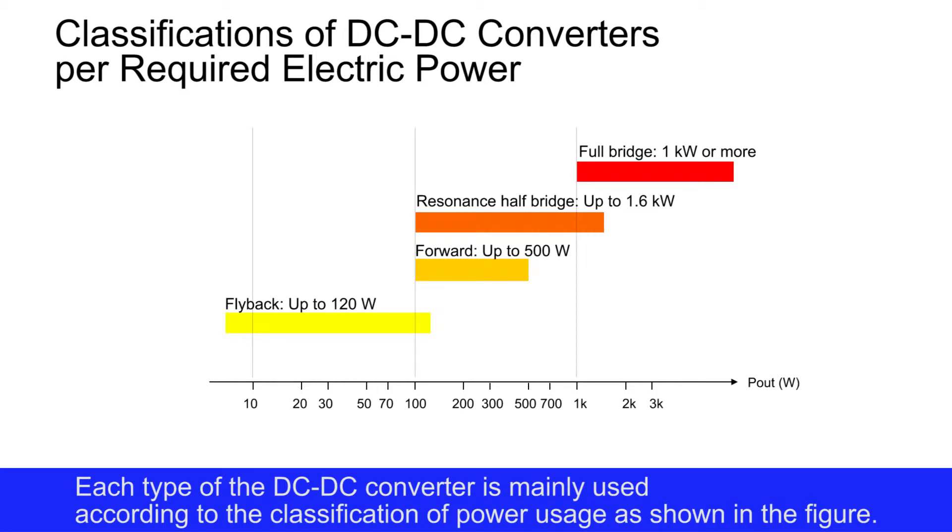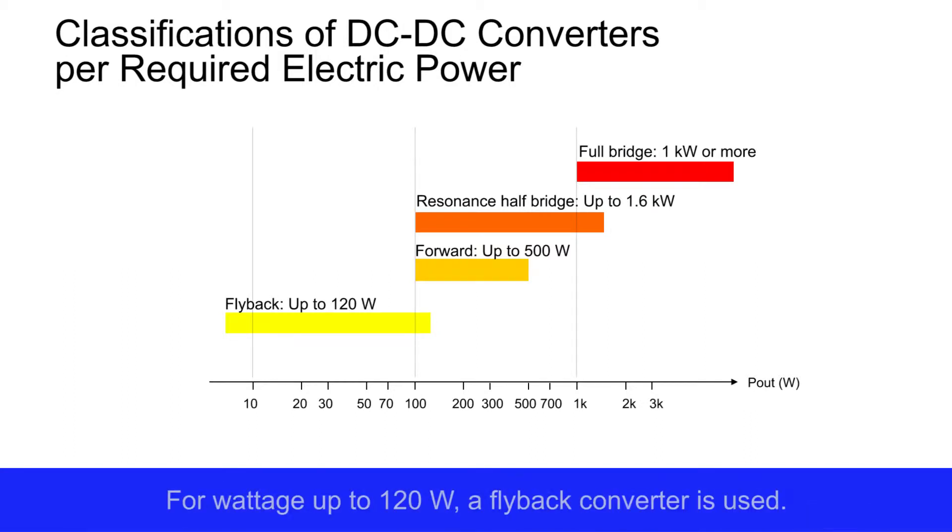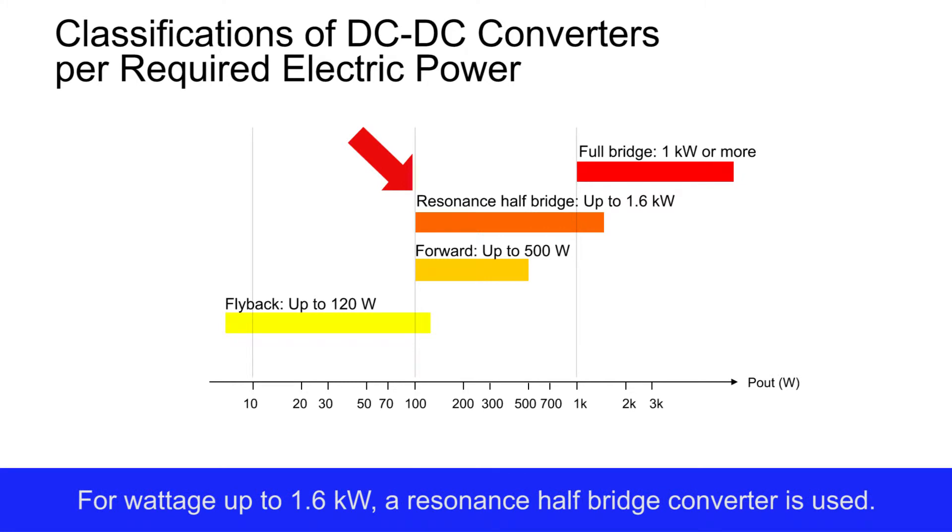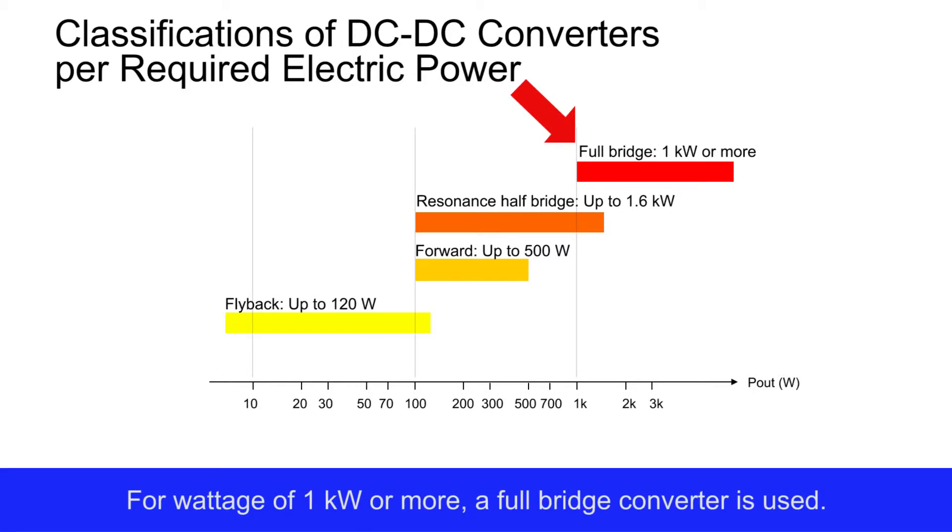Each type of DC-DC converter is mainly used according to the classification of power usage, as shown in the figure. For wattage up to 120 watts, a flyback converter is used. For wattage up to 500 watts, a forward converter is used. For wattage up to 1.6 kilowatts, a resonance half bridge converter is used. For wattage of 1 kilowatt or more, a full bridge converter is used.